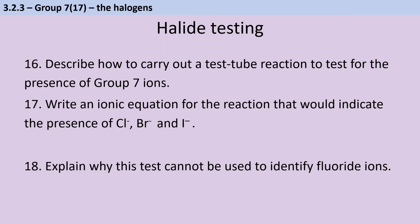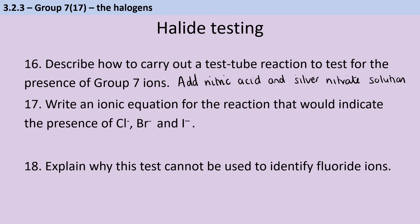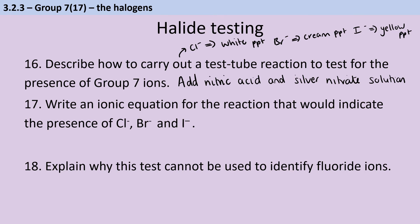To test for the presence of halide ions, we use silver nitrate, which forms various precipitates. Before adding silver nitrate, we need to add some acid to remove carbonates or sulfates that would give a false positive — usually nitric acid, since silver nitrate already contains nitrate ions. If you have chloride ions, you get a white precipitate; bromide ions give a cream precipitate; and iodide ions give a yellow precipitate.